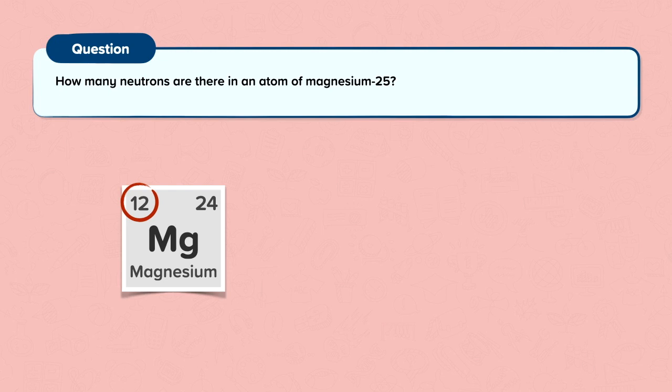The atomic number is the smaller of the two numbers, so magnesium has 12 protons. This is where you can trip up. The question has asked you for the number of neutrons in the isotope magnesium-25, but the periodic table is showing you the isotope magnesium-24. That's because the periodic table shows the weighted average of all magnesium atoms. So for this type of question we have to ignore the relative atomic mass on the periodic table and use the mass number given in the question.